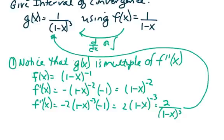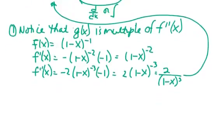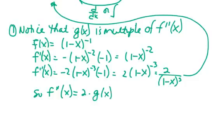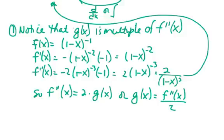So to summarize: f double prime of x is equal to 2 times g of x. Solving for g of x, we get g of x equals the second derivative of f divided by 2. We're going to use that relationship to come up with the power series representation.